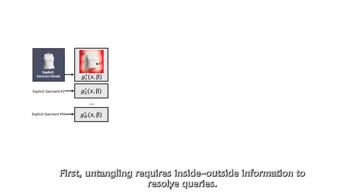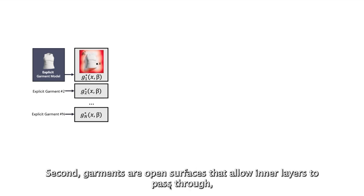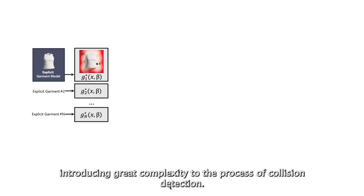First, untangling requires inside-outside information to resolve queries. Second, garments are open surfaces that allow inner layers to pass through, introducing great complexity to the process of collision detection.